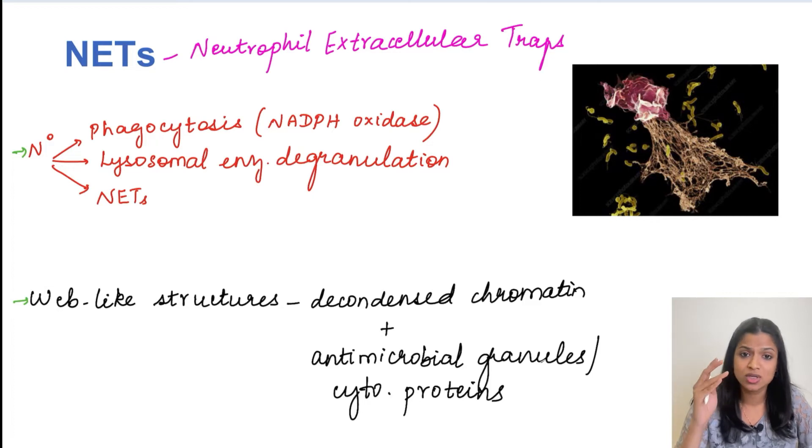Other than that, we also saw about the various lysosomal enzymes present inside the neutrophil granules. So that was also one of the mechanisms of killing. So the third mechanism by which neutrophils kill is the NETs or neutrophil extracellular traps.